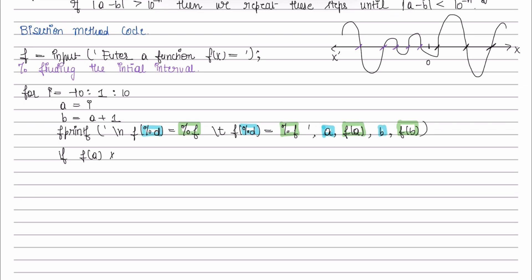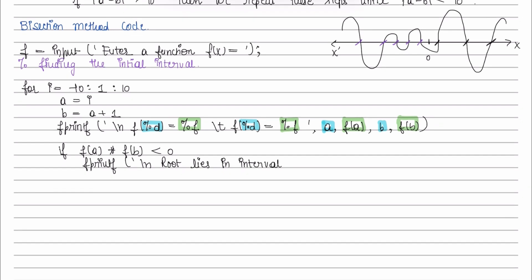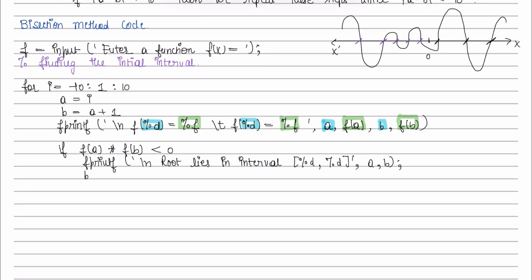So we will check if f of a and f of b product is negative. Then root lies in interval a and b. And if we have found the initial interval, we will break this loop.